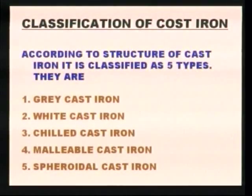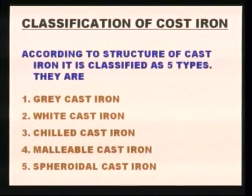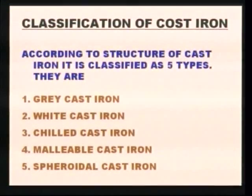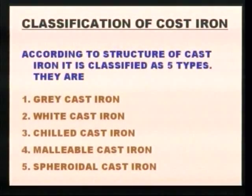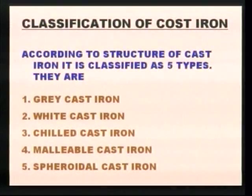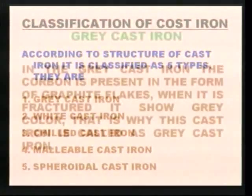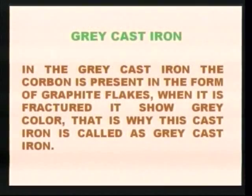The five types are: 1. Grey cast iron, 2. White cast iron, 3. Chilled cast iron, 4. Malleable cast iron, and 5. Spheroidal cast iron. First of all we will see about grey cast iron.